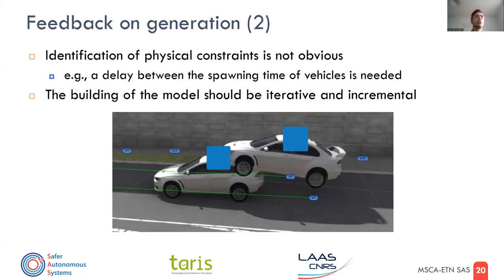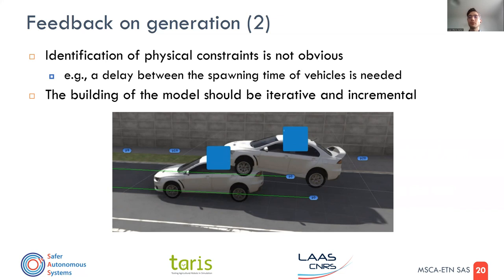This slide contains the two most important lessons. The first is that the identification of physical constraints is not obvious. For example, as shown in the figure, we had to introduce a constraint that would delay the spawning time of vehicles and pedestrians. You can start modeling, but until you simulate, you will not see exactly if it is correct.